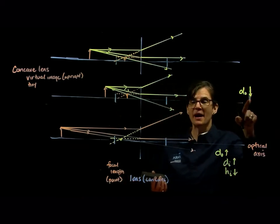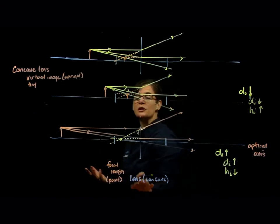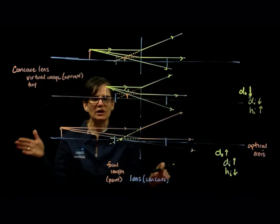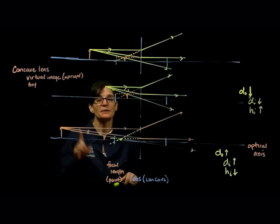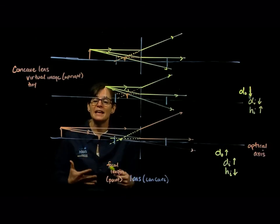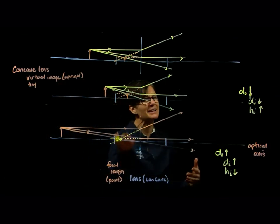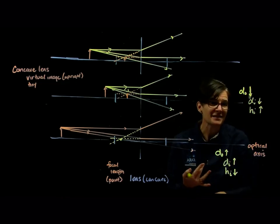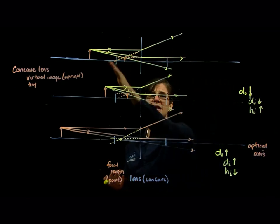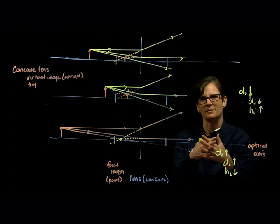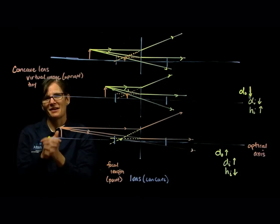As I decrease my object distance, the image distance decreases and the height of my image increases. But what are we noticing? They're all still tiny. Regardless of where I shift this object, the image will always be smaller and it will always be virtual. So for a concave lens, regardless of the location of the object, I'm always going to get a virtual image — which means I can't use a concave lens to produce an image I can print, photocopy, take a picture of, burn on film, or put on a screen. Because no matter where I put the screen, there are no rays of light converging to recreate that image. A concave lens only produces a virtual image, and that virtual image is tiny.